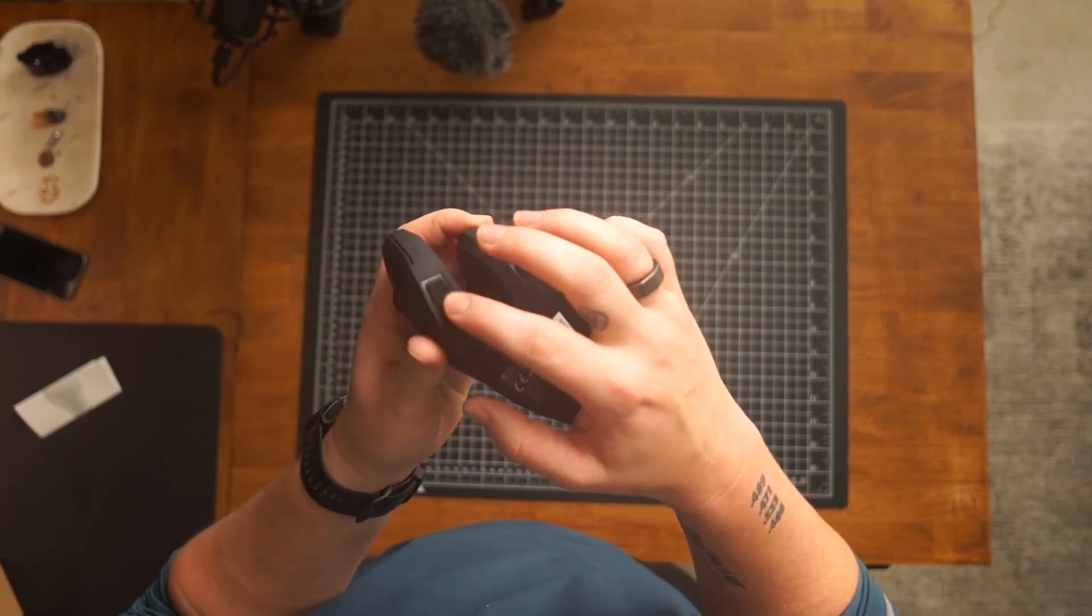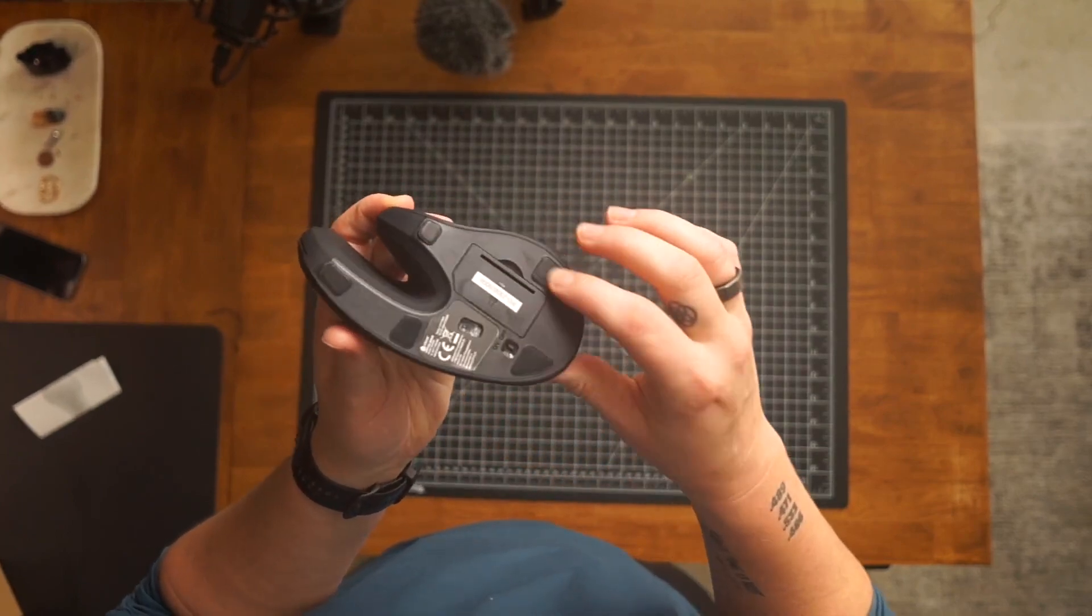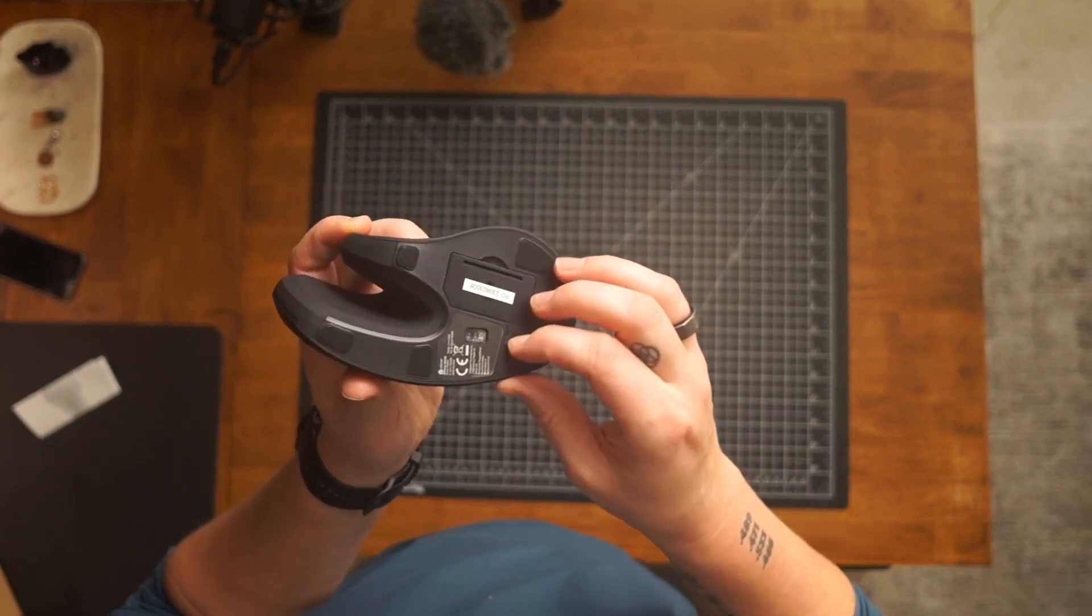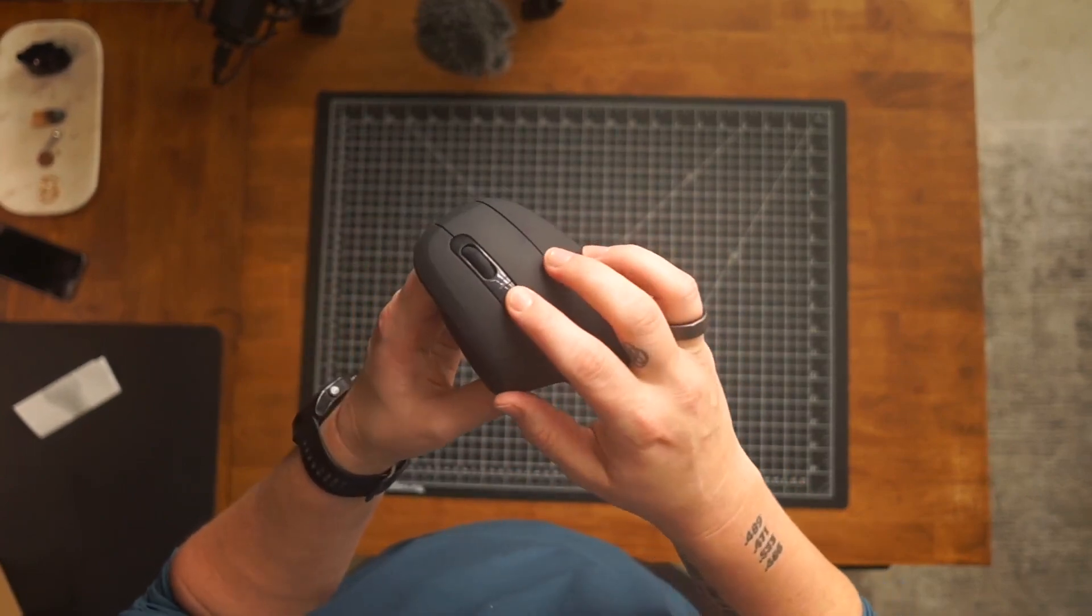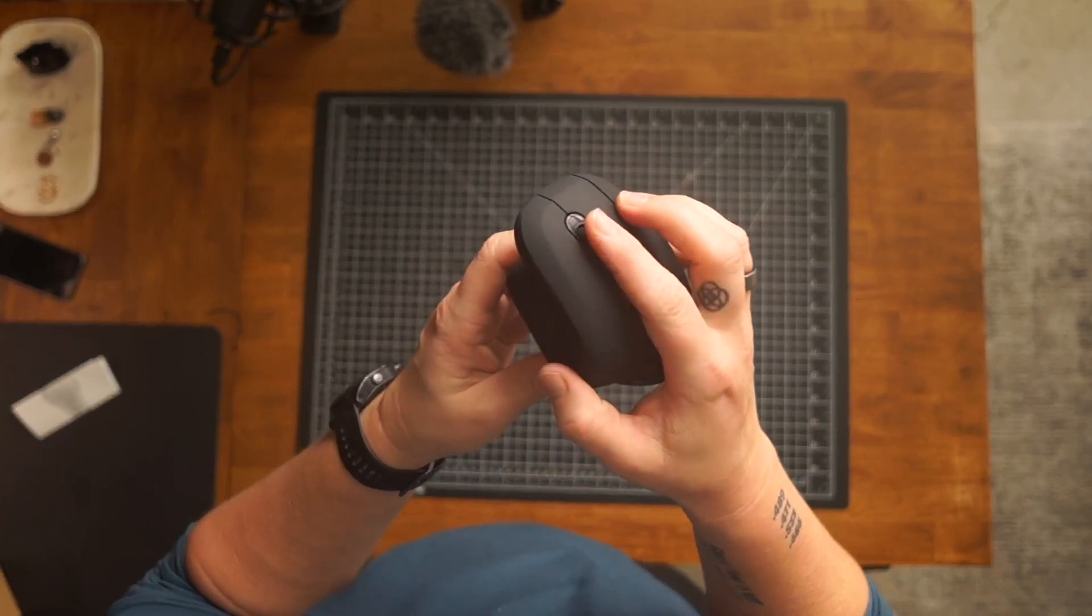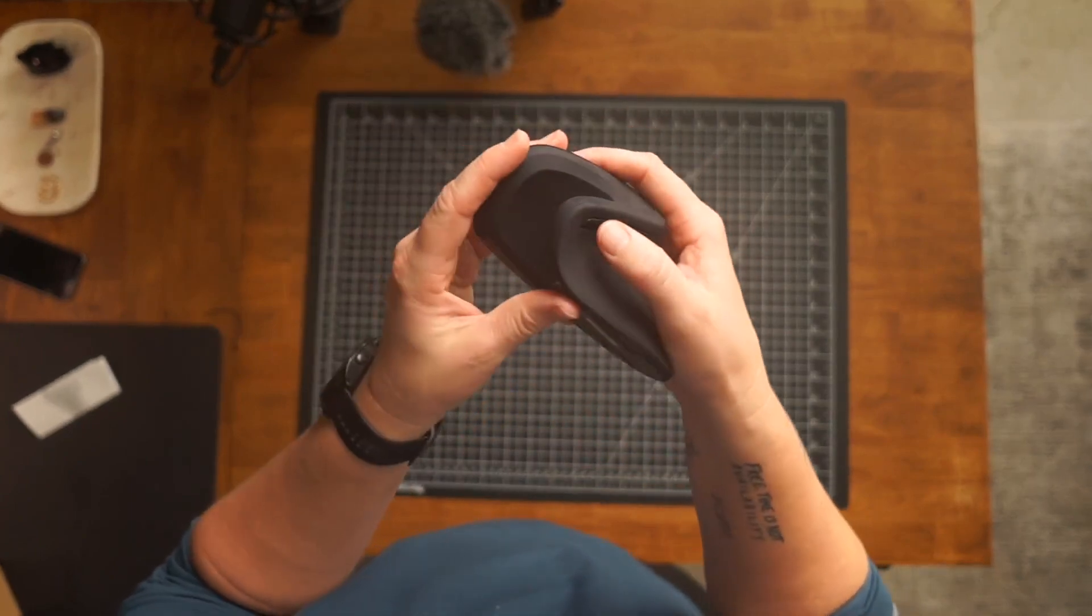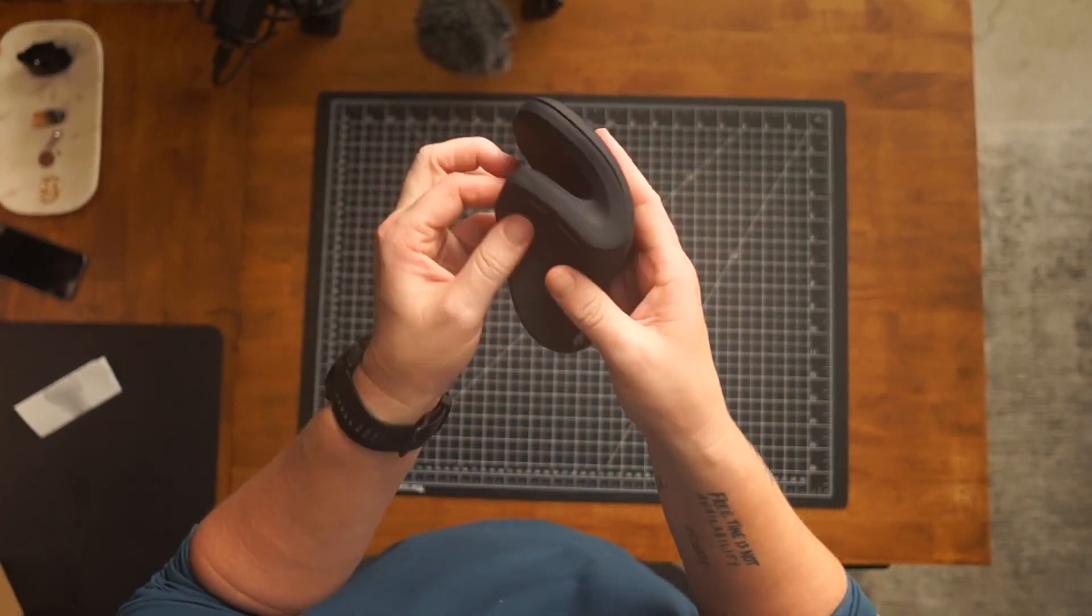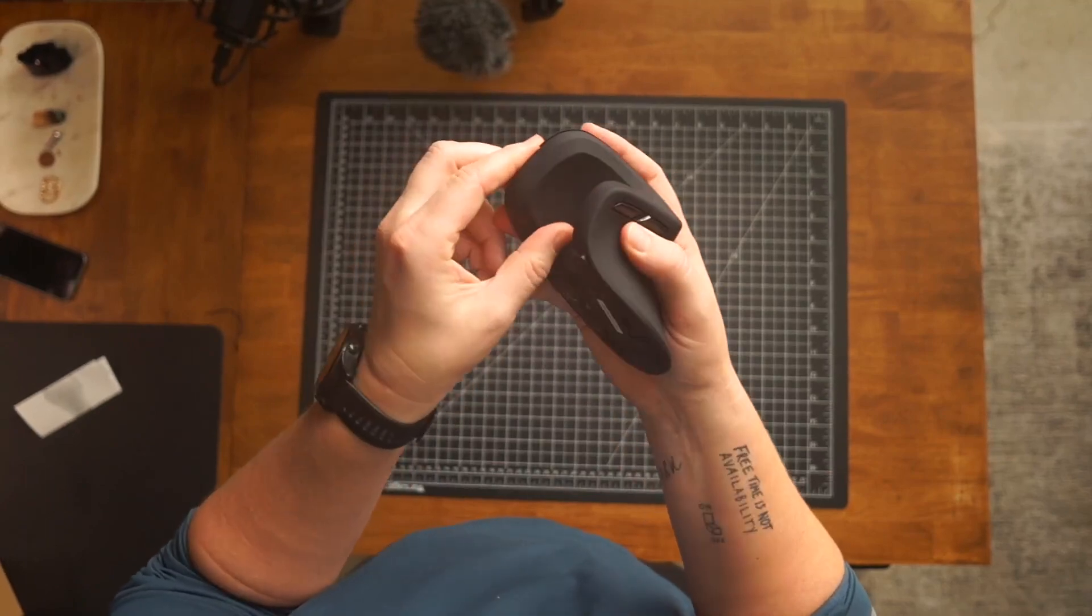They've got these mouse pieces here that give you a slide. You've got the on-off switch here, and this button. You've got the scroll wheel, and then you've got a button here, button here, and I think that's it for buttons.